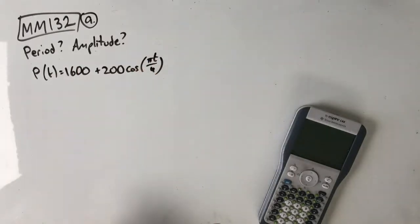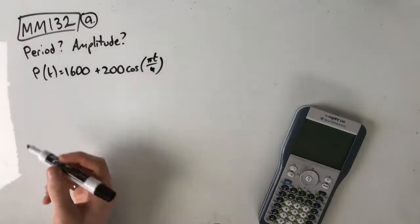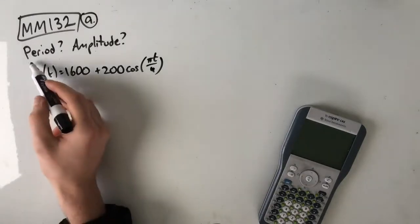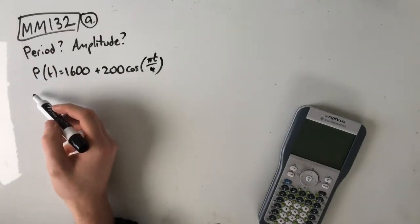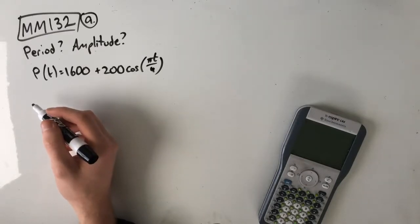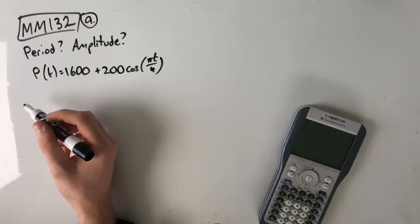Our population of possums varies according to this function where p is the number of possums living in this area t months after the 1st of February 2016. So part A, find the period and amplitude of the function p.